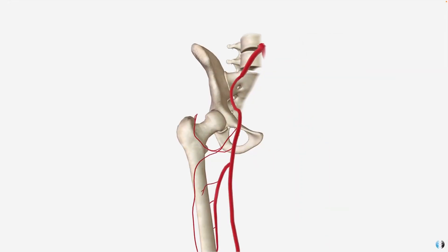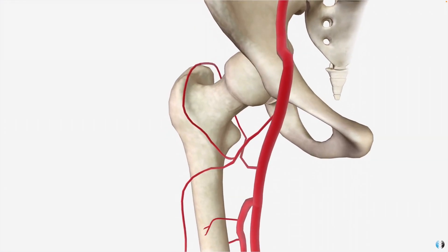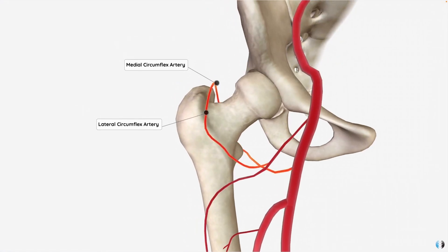The main artery running down the anterior pelvis is the external iliac artery, which branches into the femoral artery. Two really important arteries that branch off the femoral artery are the medial circumflex artery and the lateral circumflex artery. We can see that both of these actually join to create a ring of arterial supply around the neck of femur, with a lot of smaller deeper vessels branching off this ring to supply the femoral neck and the femoral head further.